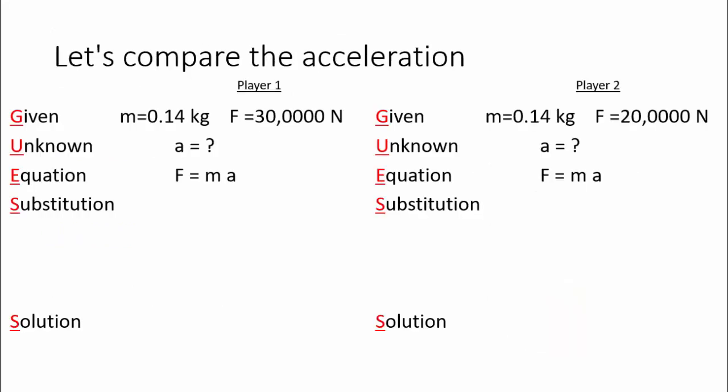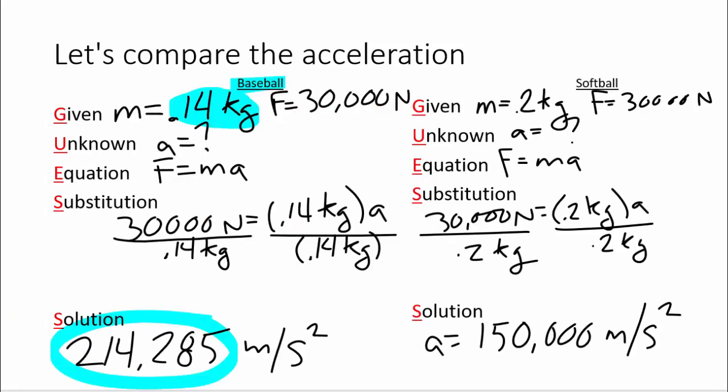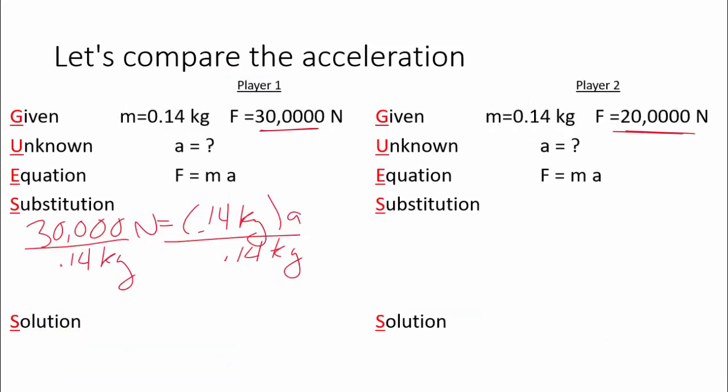Now I wrote down all of the givens here to make things go a little quicker for us. We know the mass is 0.14 for both of them. And the thing that we're changing is the amount of force. So let's skip down to the substitution step. 30,000 newtons equals 0.14 kilograms times A. Divide both sides by 0.14 kilograms. And this is the same calculation that we did before. And so the answer is going to come out to be 214,285 meters per second squared.